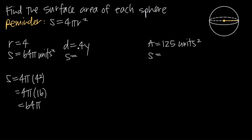What if we're told that the diameter is equal to 4y, and we have this variable in our diameter? We've been given the diameter but we need the radius, since we plug radius into our surface area formula. The radius is always half of the diameter, so since the diameter is 4y, the radius must be equal to 2y.